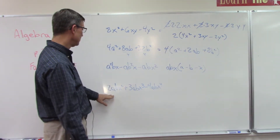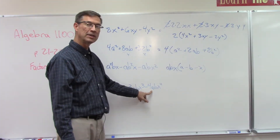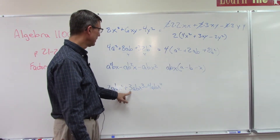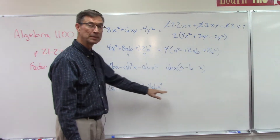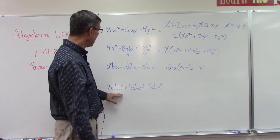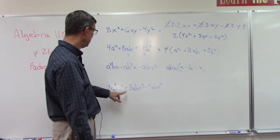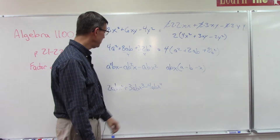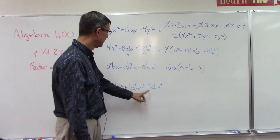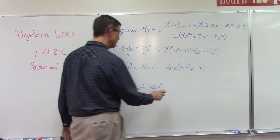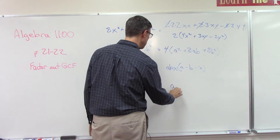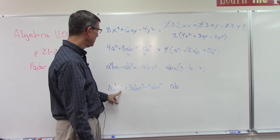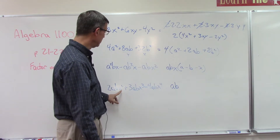This one's a bit more complicated. We have a 2, a 3, and a 4 — can I take any number out of 2, 3, and 4? No, because of that 3 we can't. Do they all have an a? Yes. Do they all have a b? Yes. Do they all have an x? Yes — but the x is going to be a little tricky. I can't take out any numbers but I can take out the a and the b. Now I could take out just x, but actually the greatest common factor is x squared.